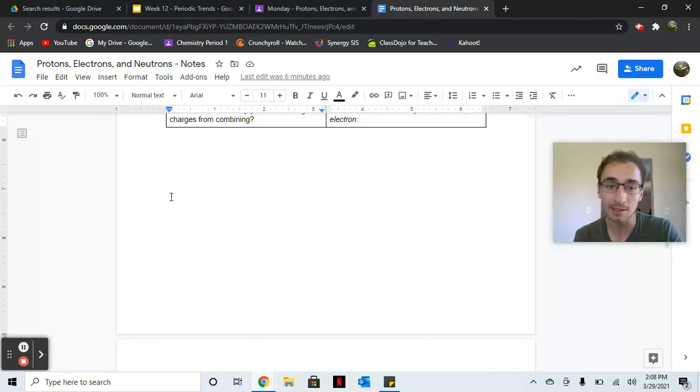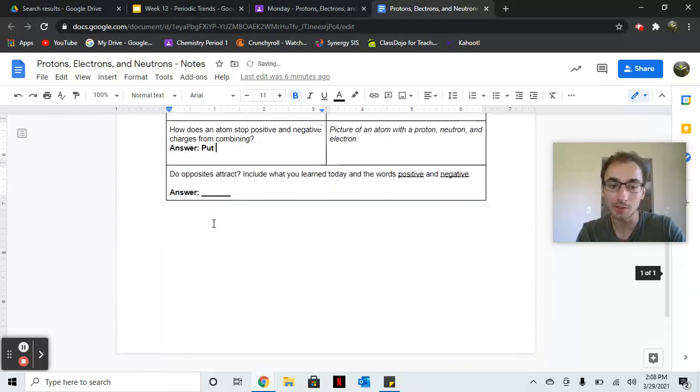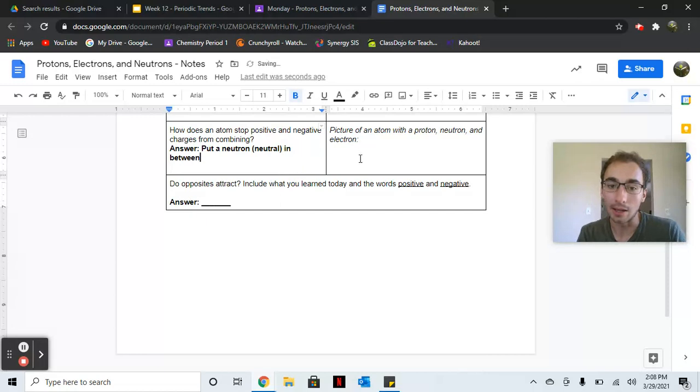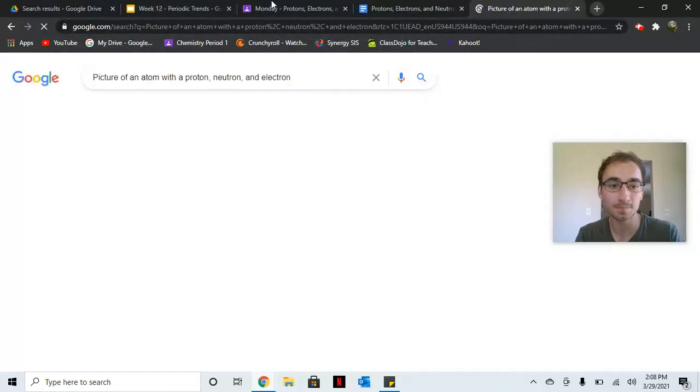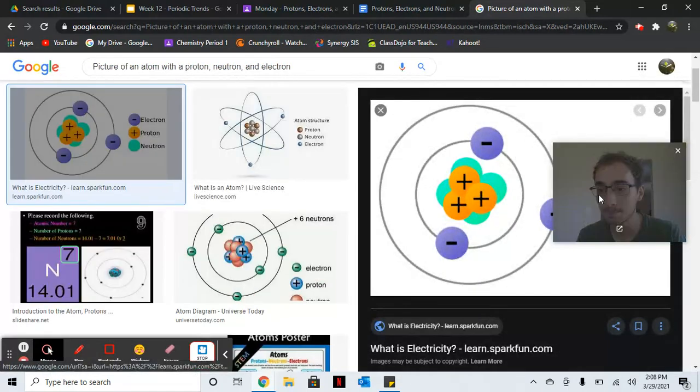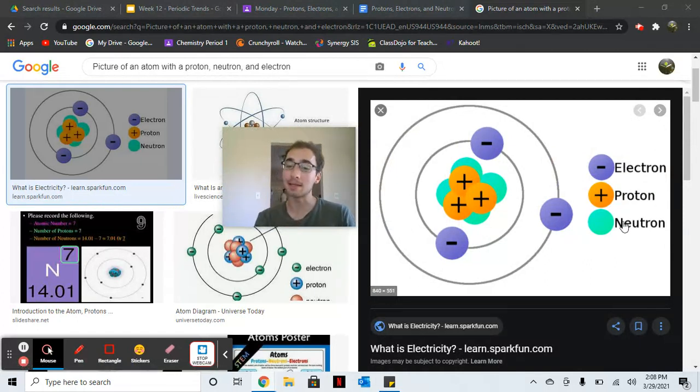And that's the same thing that the atom does. So what atoms will do, will put a neutron, something that's neutral, doesn't have a charge, in between. And that's why I wanted to give you the picture of an atom with a proton, neutron, and electron, because then you'll be able to see that even though the positive and negative are attracted to each other, it's nice that the atom has these neutrons so they can keep these two from colliding.